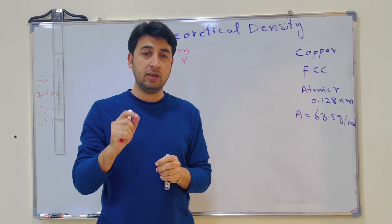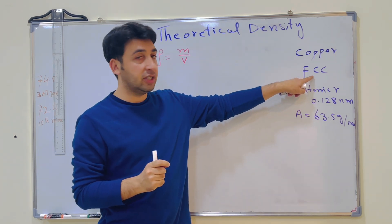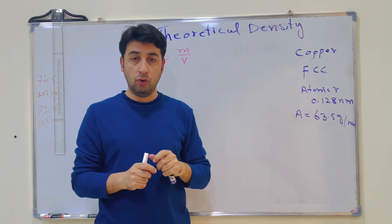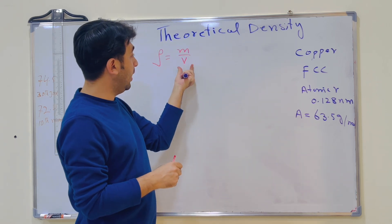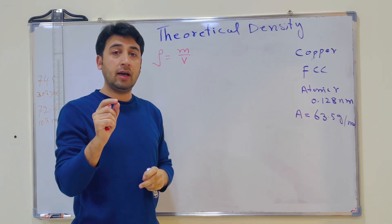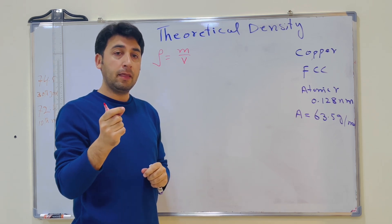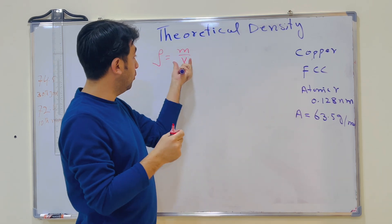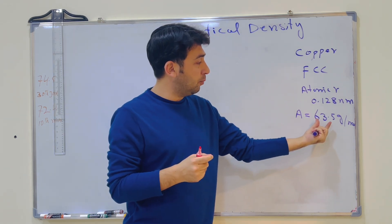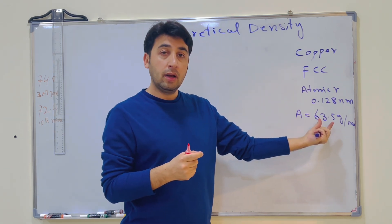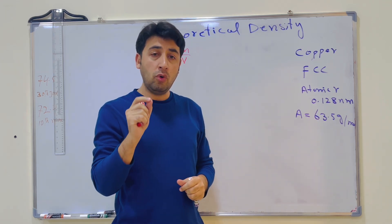FCC has four atoms. Since copper has FCC crystal structure, FCC has four atoms. So first let us find the mass of each atom of copper, then we will find the mass of four atoms divided by the volume. We know that 63.5 grams is the mass of one mole of copper atoms.